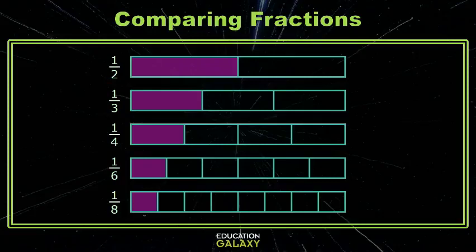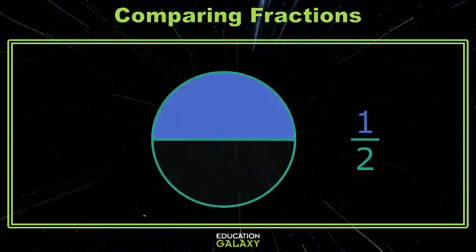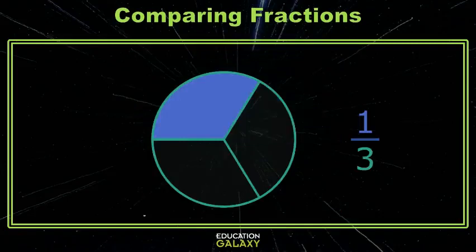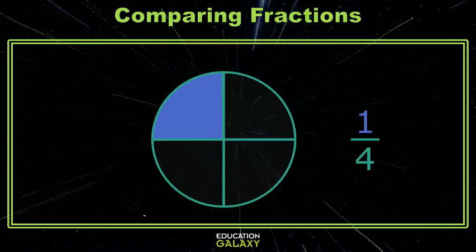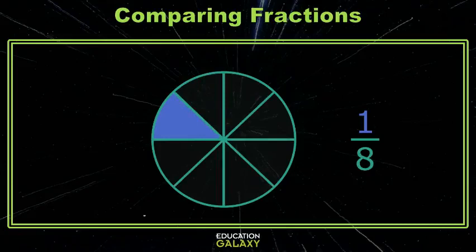Let's look at that on a fraction circle. Here I have one half shaded. Notice, as my fraction changes from one half to one third, that less is shaded. And the same as I move to fourths, sixths, and eighths. The denominator grows, the amount shaded is smaller.